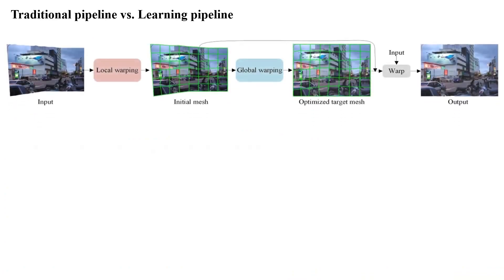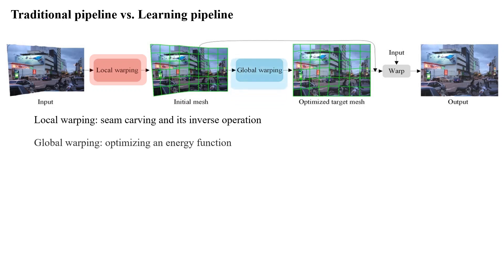There are two stages in the traditional rectangling pipeline. In the local warping stage, the seam carving algorithm and its inverse operation are used to get the initial mesh that best fits the irregular boundaries. In the global warping stage, an energy function is defined to optimize the target mesh.